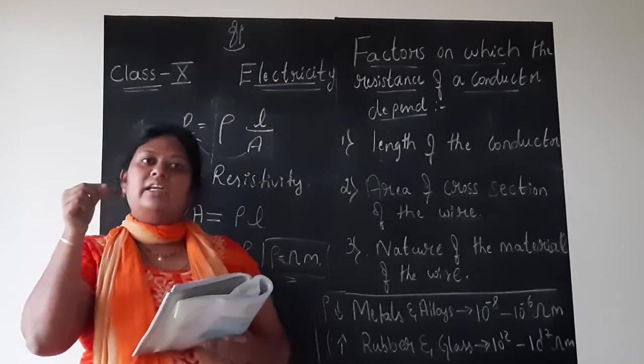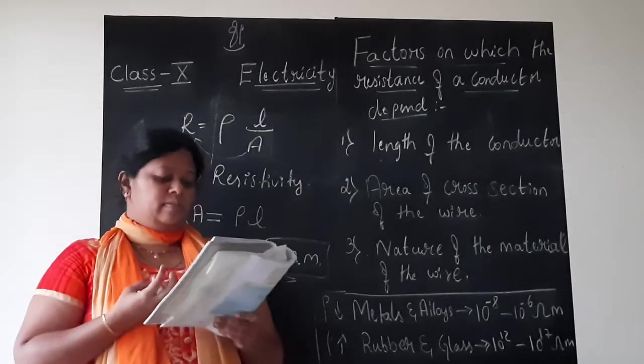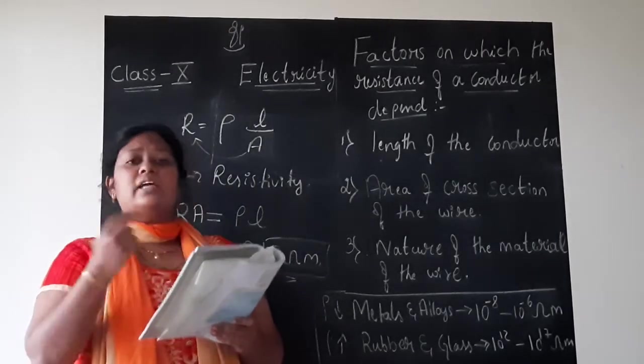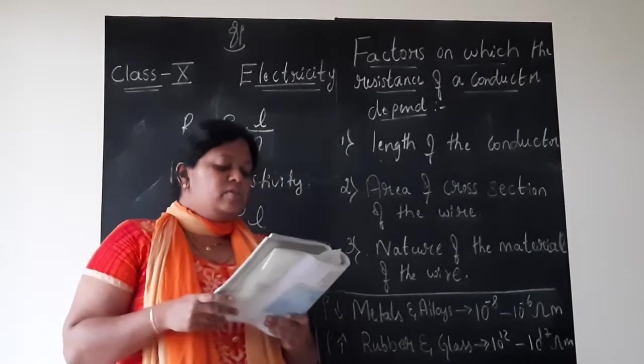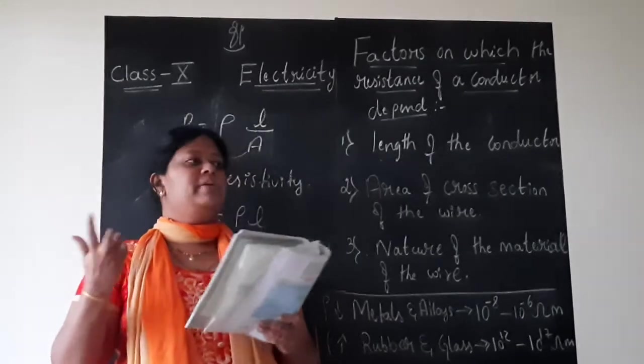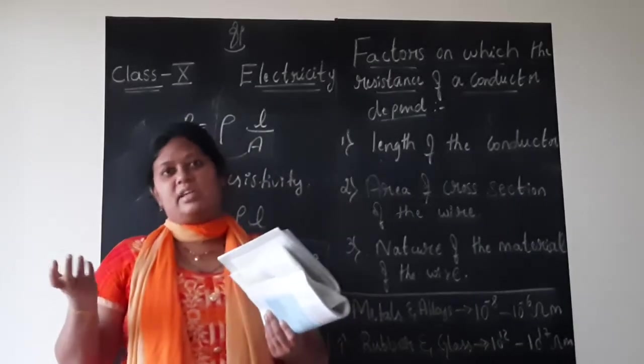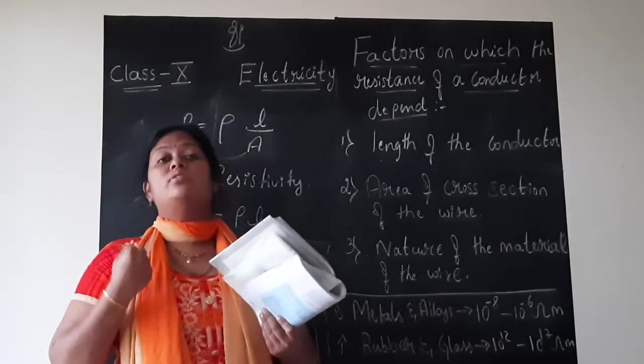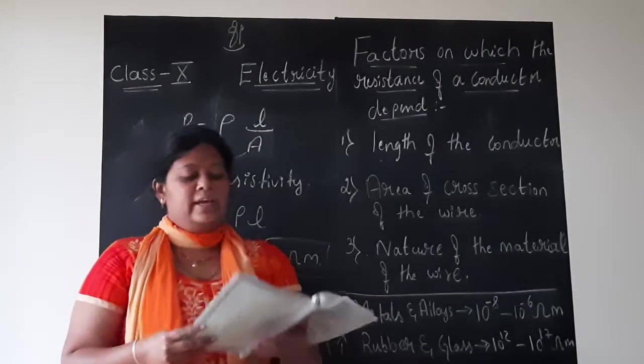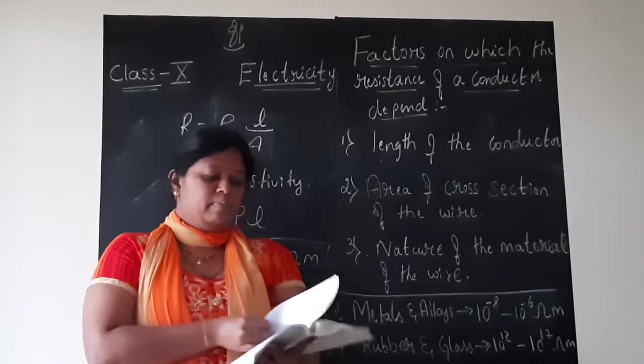In case of electric bulbs, tungsten is used, you all know it. And alloys are used in heating devices like iron box or toasters. Why? Because they do not oxidize easily, means they do not catch fire when they come in contact with the air. That is very important.